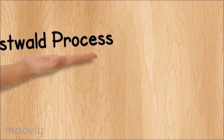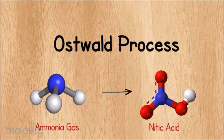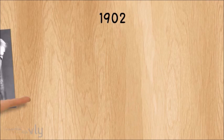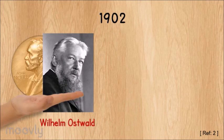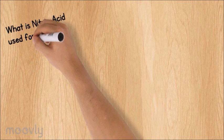In this video we learn about the Ostwald process to produce nitric acid from ammonia gas. The Ostwald process was developed in 1902 by Wilhelm Ostwald, who was awarded the Nobel Prize for his work in 1909.